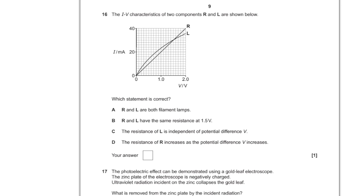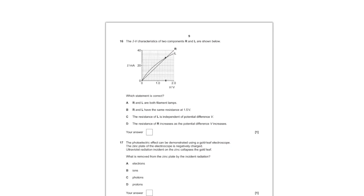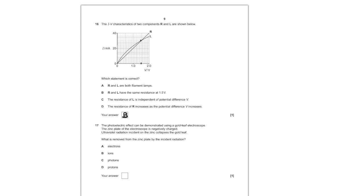For question number 16, we are given IV characteristic curve and a straight line for the two components, R and L. Which statement is correct? Let's see, R and L are both filament lamps. No, they're not, because the line R is straight and therefore it is an ohmic conductor, whereas filament lamp is non-ohmic. R and L have the same resistance at 1.5 volts. 1.5 volts, that is here, so they do meet. If they meet, the resistance is going to be the same. So I'm going to say B is the straightforward answer.